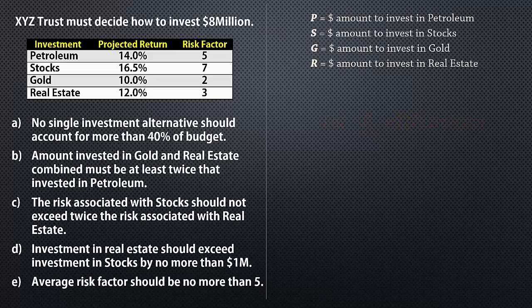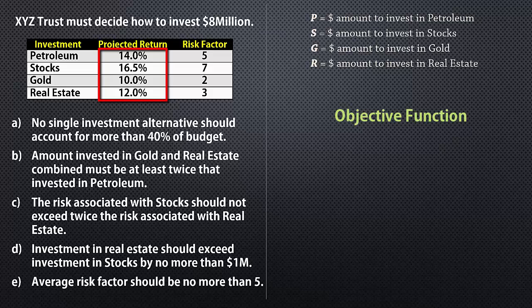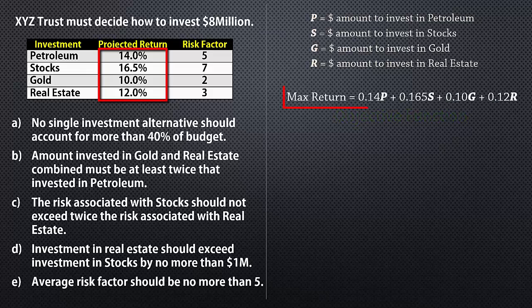Next we state the objective function. Since return on investment is clearly the product of the rate of return and the amount invested, we can state the objective as follows: Maximize 0.14P plus 0.16S and so on.